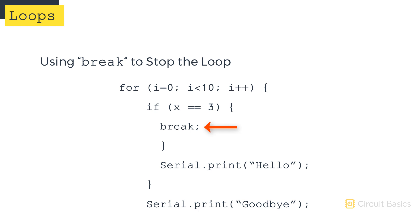For example, you can use break to stop the loop when a specific event occurs. In this example, I put break inside of an if statement. If x equals 3, the if statement will run, and the break command will be executed. That'll cause the sketch to exit the for loop, so this serial print hello won't be executed. But since this serial print goodbye is outside of the for loop, it will be executed.